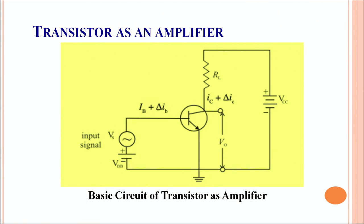In the forward bias, it allows the base current to flow through this. So apart from IB, there's a small amount of current from the input signal which also passes through the input circuit. In the output circuit, the output voltage is measured across the load resistance. An increase in the input current leads to an increase in the collector current by a small amount delta IC, thereby there is a large voltage gain across the load resistance.